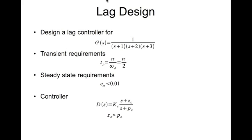The controller has the following transfer function: D(s) equal to Kc times (s+zc) divided by (s+pc). This just looks like the lead controller, but in this case the magnitude of zc is greater than pc, which means that pc is closer to the imaginary axis as compared to zc.